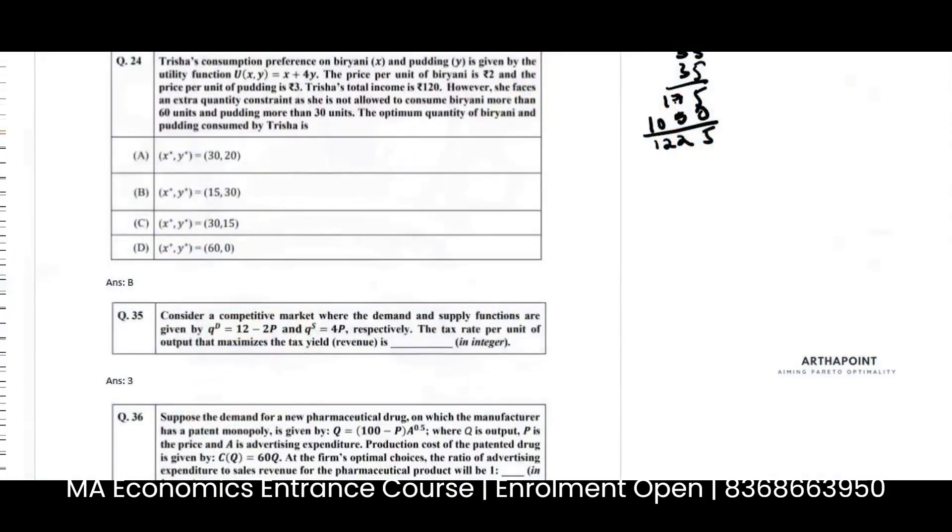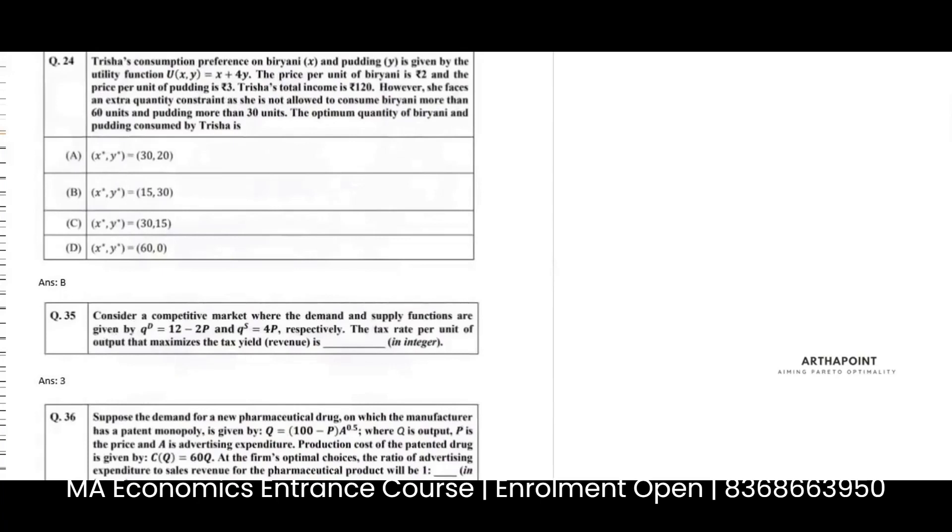Let's go to the next portion. Again, GATE 2021. This says Trisha's consumption preferences on biryani and pudding. Now, this actually came from one of our assignment only. This is there in your assignment. If you look at the initial assignments on utility function, you will find exactly the same question there. So it's like a bonus question that we have. In fact, the other ones also, but this was with the same numbers also, I think.